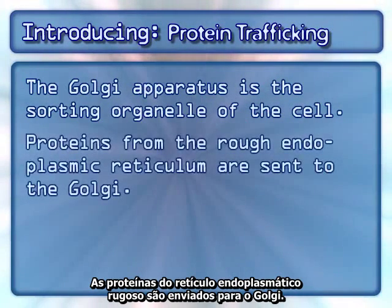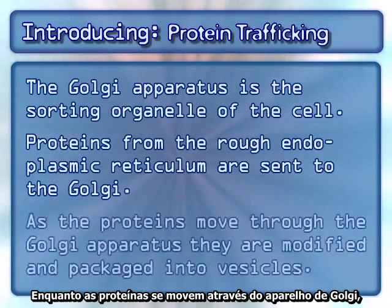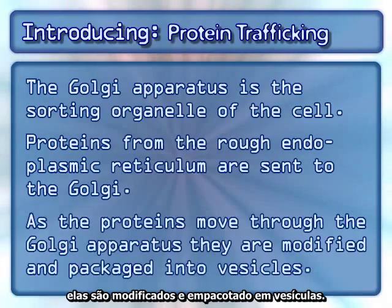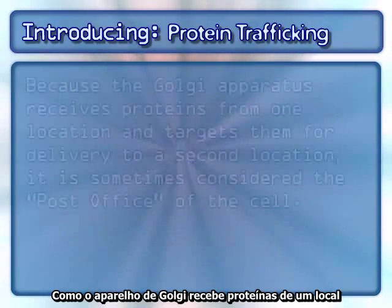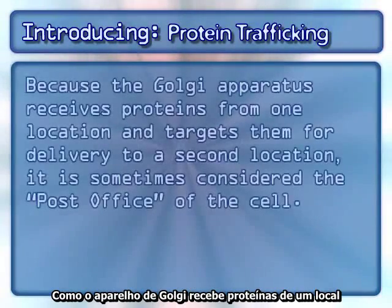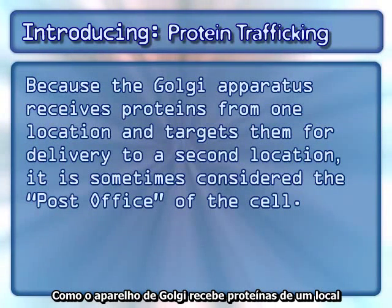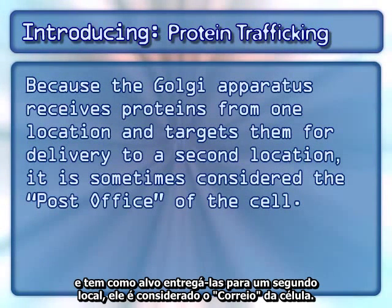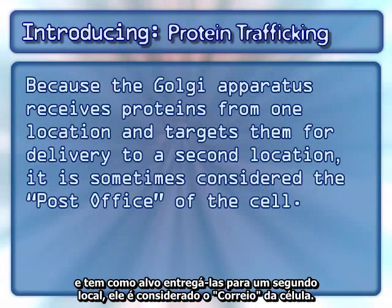Proteins from the rough endoplasmic reticulum are sent to the Golgi. As the proteins move through the Golgi apparatus, they are modified and packaged into vesicles. Because the Golgi apparatus receives proteins from one location and targets them for delivery to a second location, it is sometimes considered the post office of the cell.